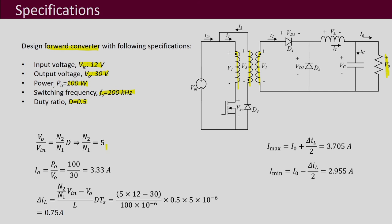First we do the basic calculations. For this converter, VO/Vin = (N2/N1)·D. Since D = 0.5, substituting VO and Vin gives N2/N1 = 5. Note this is only the ratio of N2 to N1; we have not yet decided the actual number of turns — only the ratio is decided here.